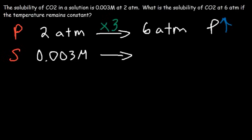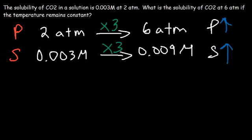Now according to Henry's Law, if the partial pressure of a gas goes up, then the solubility will also increase proportionally. So it should increase by a factor of three. Three times three is nine, so 0.003 times three is 0.009. This is the answer.